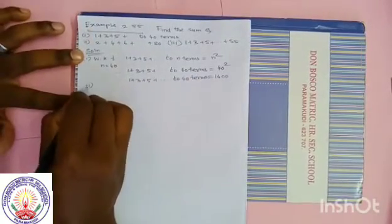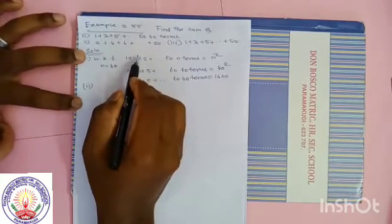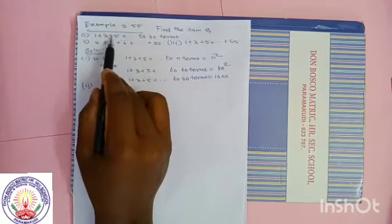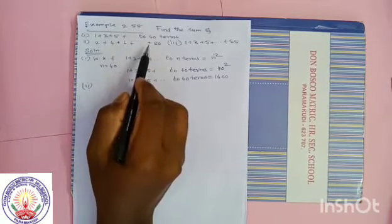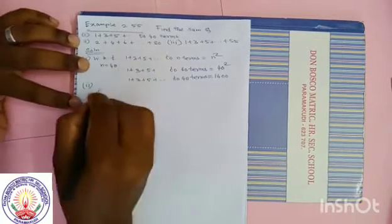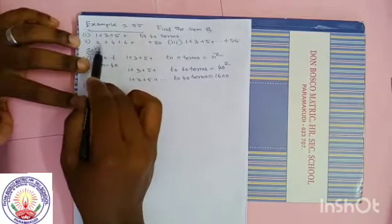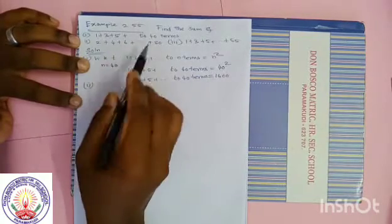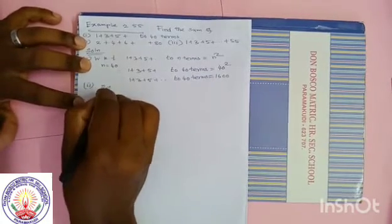Second subdivision. The question is 2 plus 4 plus 6 plus dot dot dot plus 80. We know the formula for sum of odd numbers and sum of natural numbers. Here, sum of even numbers — we don't have a direct formula. So let us see if there is anything common between the numbers: 2, 4, 6, 80 — all are even numbers. So we can take 2 outside.